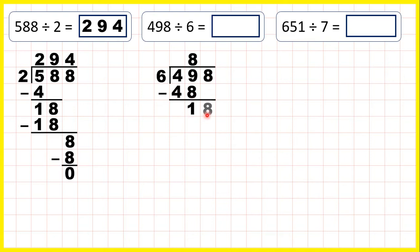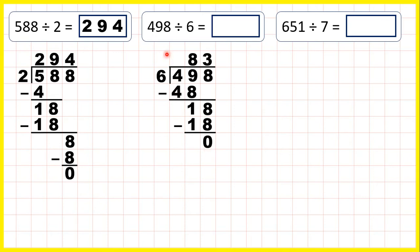So now we subtract and bring down: 49 minus 48 is 1, and we can bring down the 8 — the last digit — so we have 18 divided by 6. Now that's exactly 3, because 3 times 6 is 18. And because this 8 was our last digit, I like to just write the 3 in the answer straight away. But if you want to show that there's no remainder, you can subtract 18 and get 0. So 498 divided by 6 is 83.